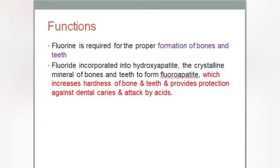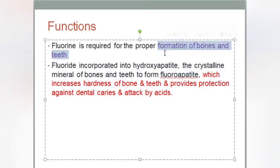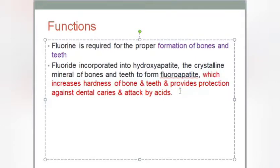We are going to see the different functions of fluoride. Fluoride is required for the proper formation of bones and teeth — it is an essential mineral for this. Fluoride is incorporated into hydroxyapatite, the crystalline mineral of bones and teeth, forming fluorapatite, which increases the hardness of bone and teeth. Fluorine provides hardness to teeth and protection against dental caries and acid attack.